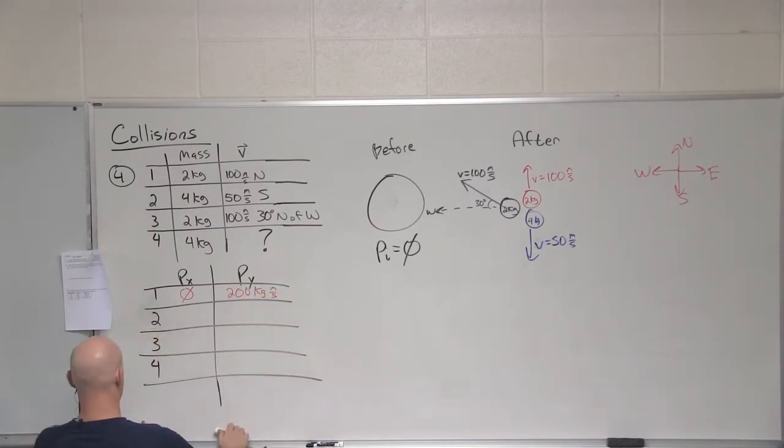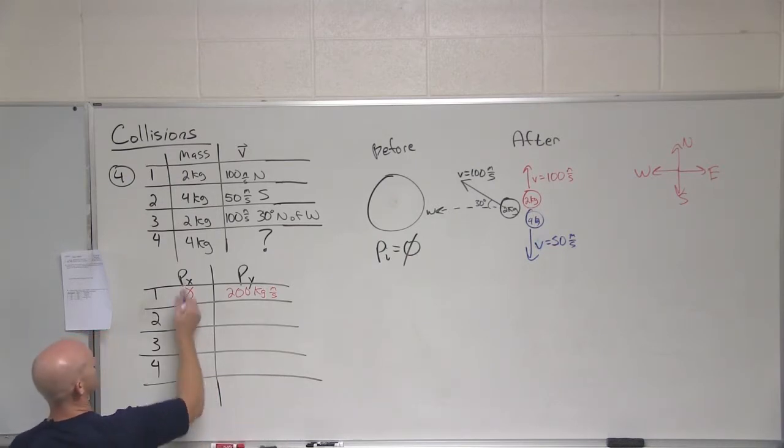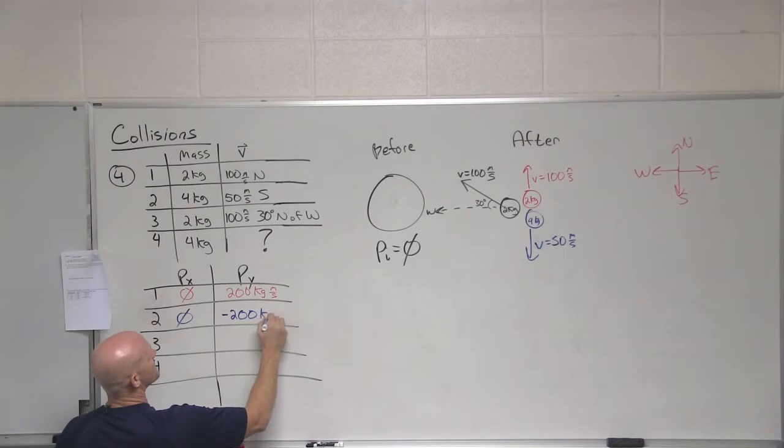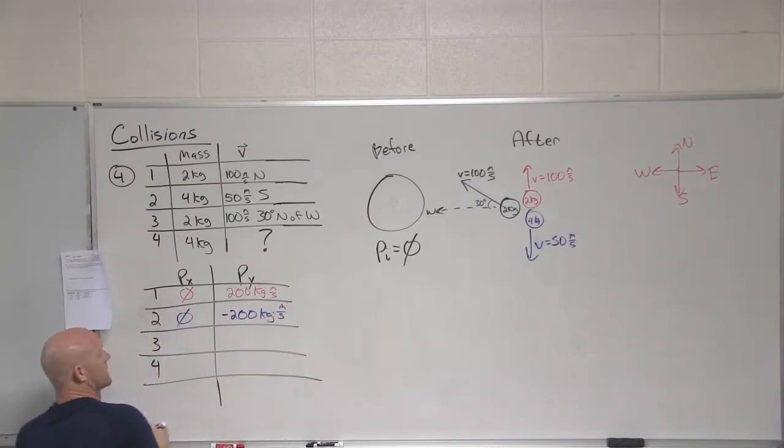200. Awesome. Kilogram meters per second. Great. Object number two. Fragment number two, I should say. What's its momentum in the x direction? Zero. Also zero. Negative 200. Good. So it's south, so I'm going to call that negative in this case. Great.